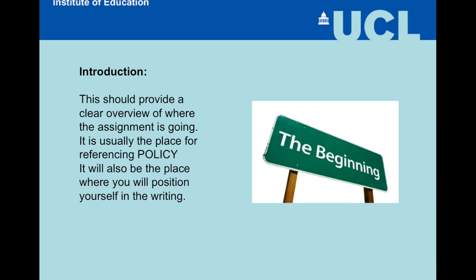The assignment has an introduction that should provide a clear overview of where the assignment is going. Oddly enough, it's usually the place for referencing policy, and it's also where you'll position yourself in the writing. Most academic writing occupies the third person, though narrative work will tend to occupy a first-person position. You should flag up in the introduction how you fit with what's going on — for instance, in relation to your case study, are you a participant or an observer?